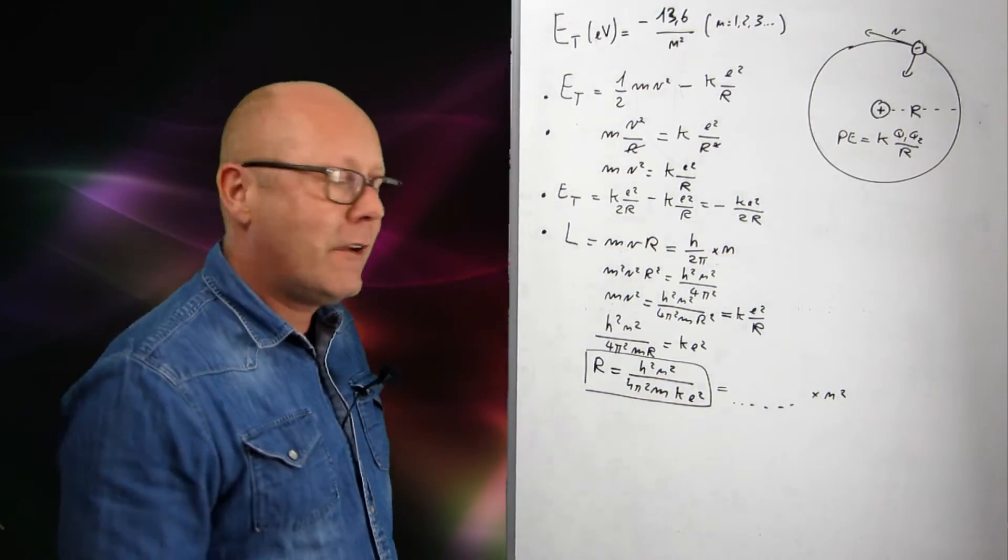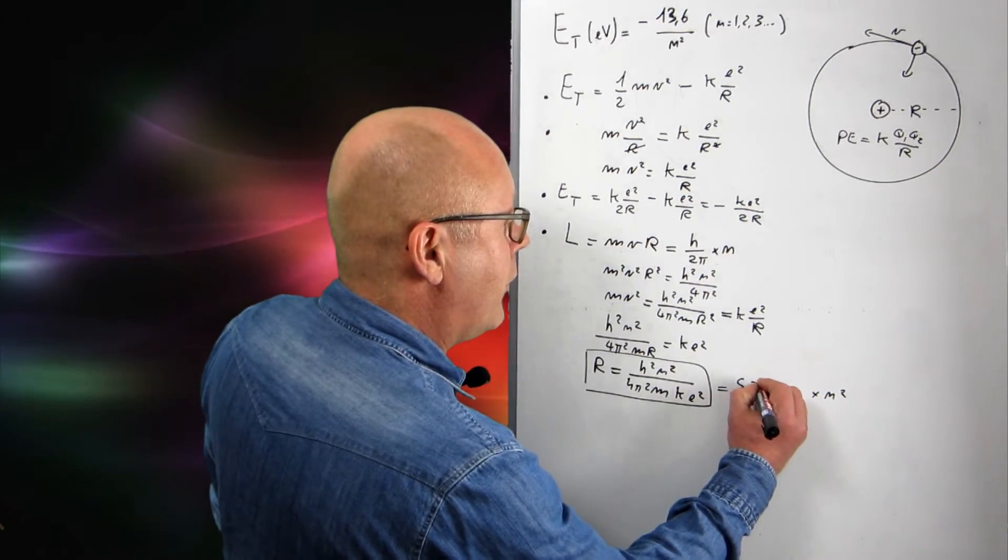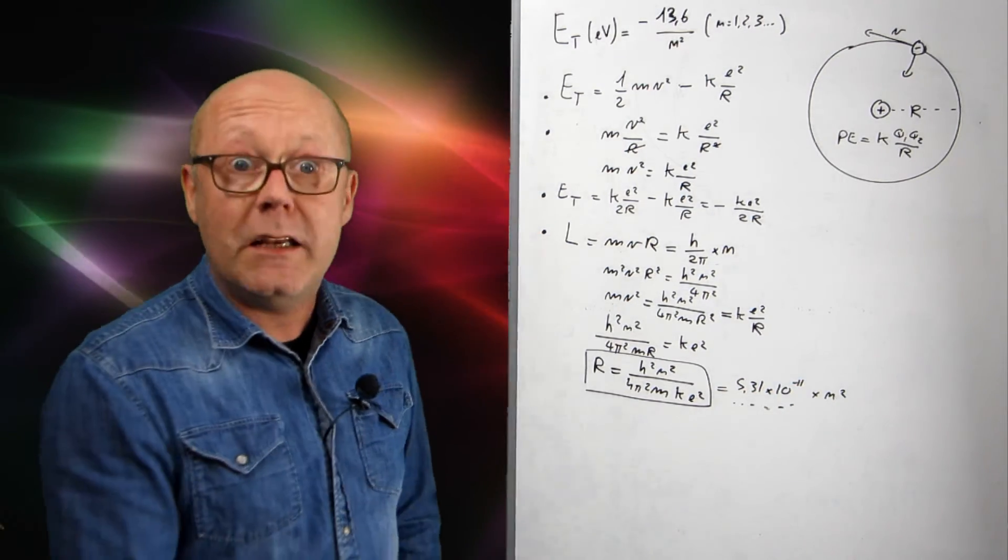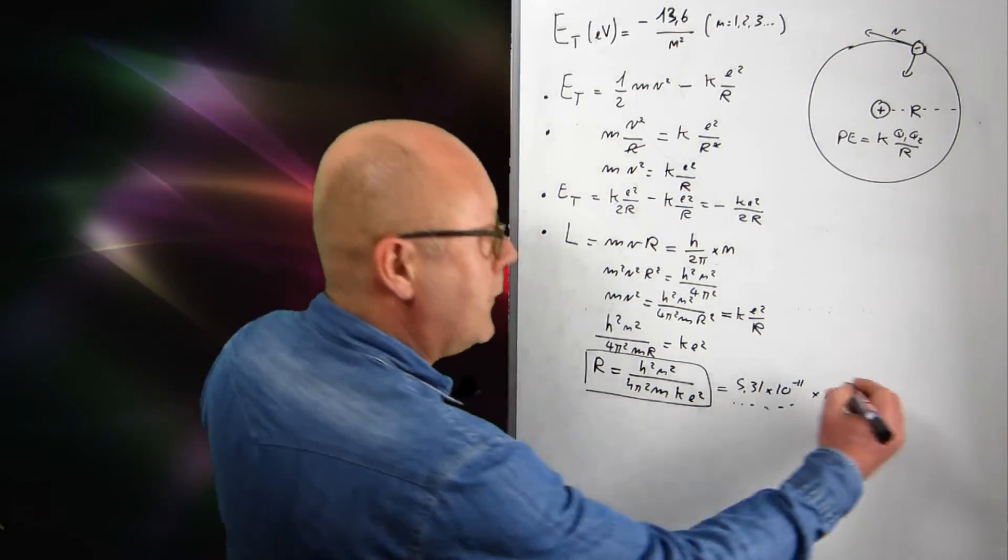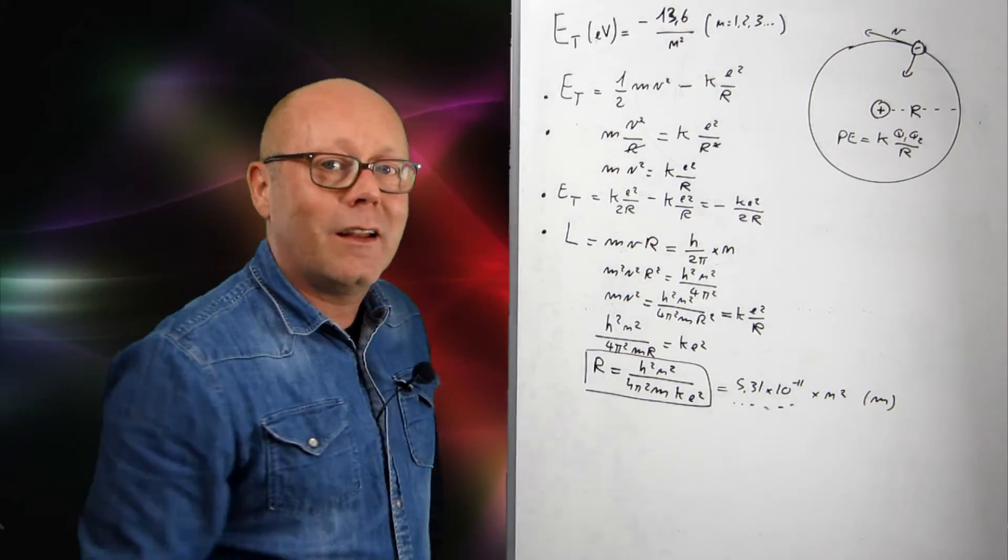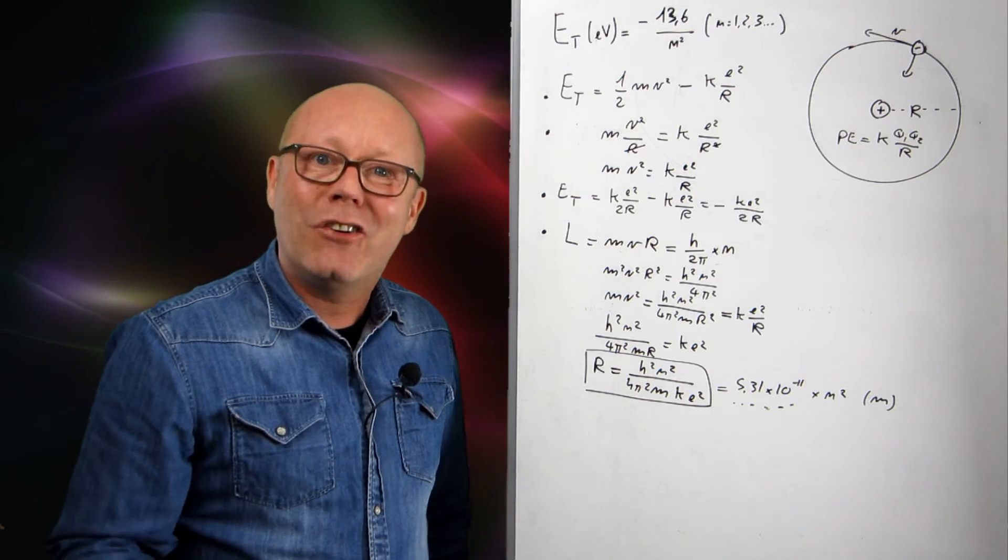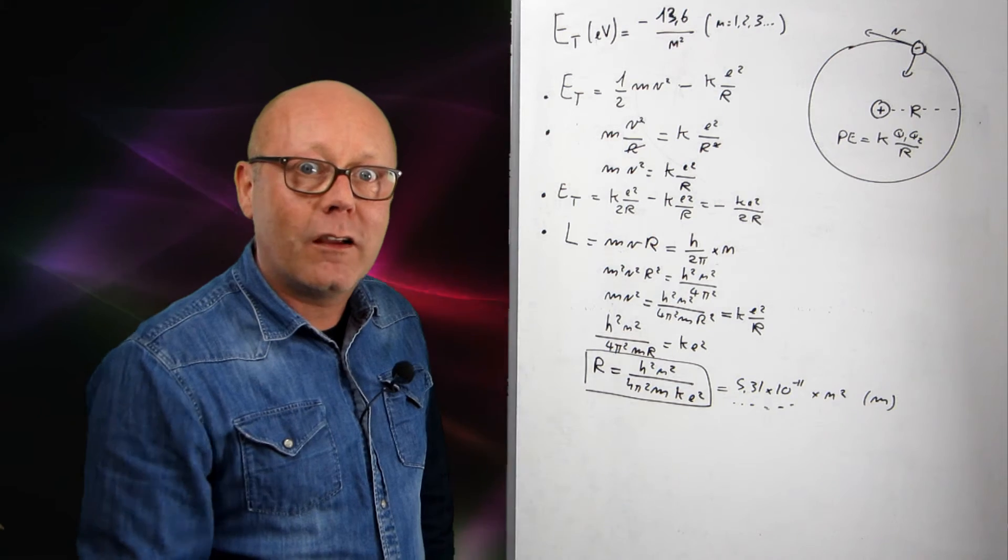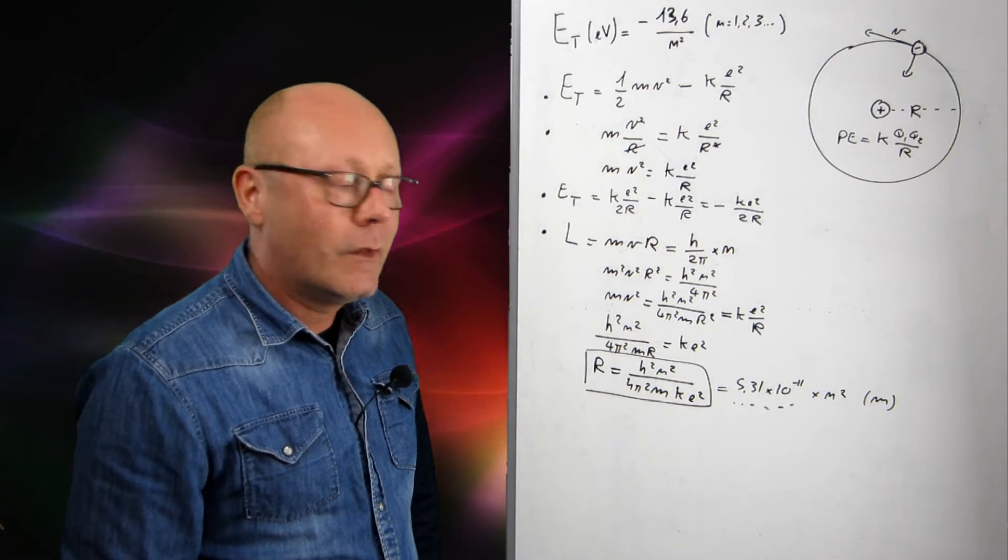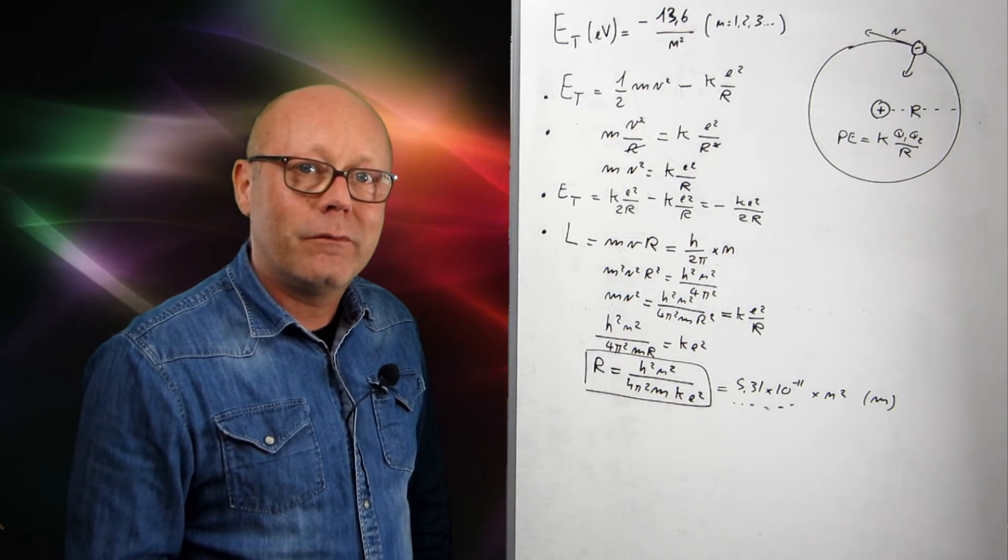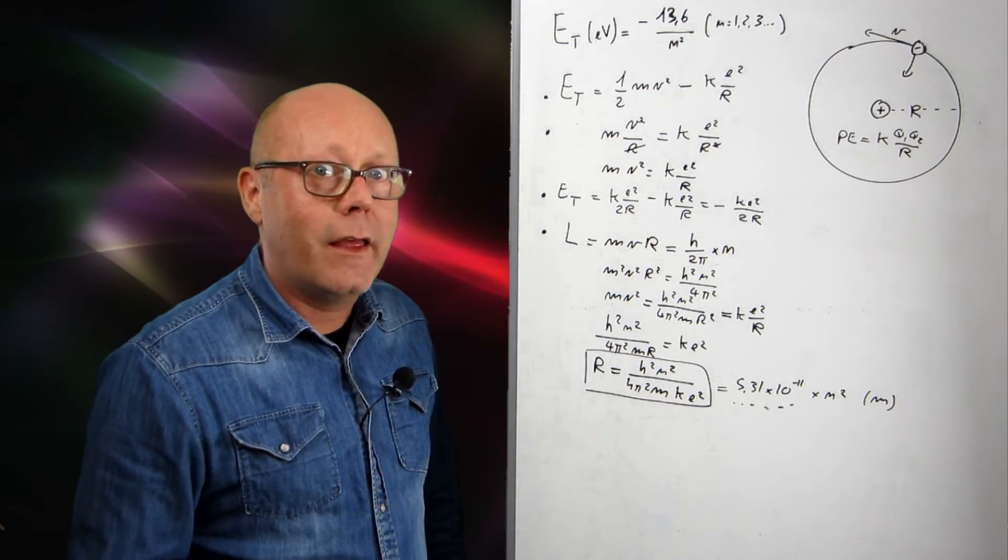When I did the calculation, I found 5.31 by 10 to the minus 11, in meters. That would be in meters. Well, this, for n equals 1, corresponds to the radius of the hydrogen atom as we know it, in its ground state. So it works. You see, the radius is now quantized. It can only have certain values. We're getting somewhere there.